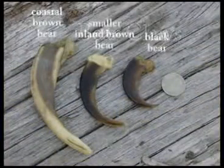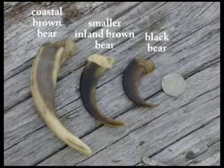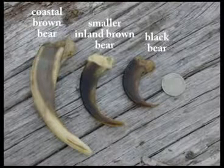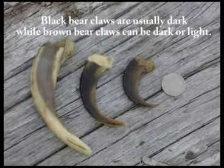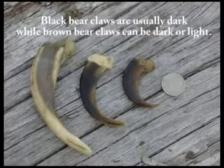Here you can see the differences in bear claws: a coastal brown bear on the left, a smaller inland brown bear in the middle, and a black bear on the right. Black bear claws are usually dark, while brown bear claws can be dark or light.